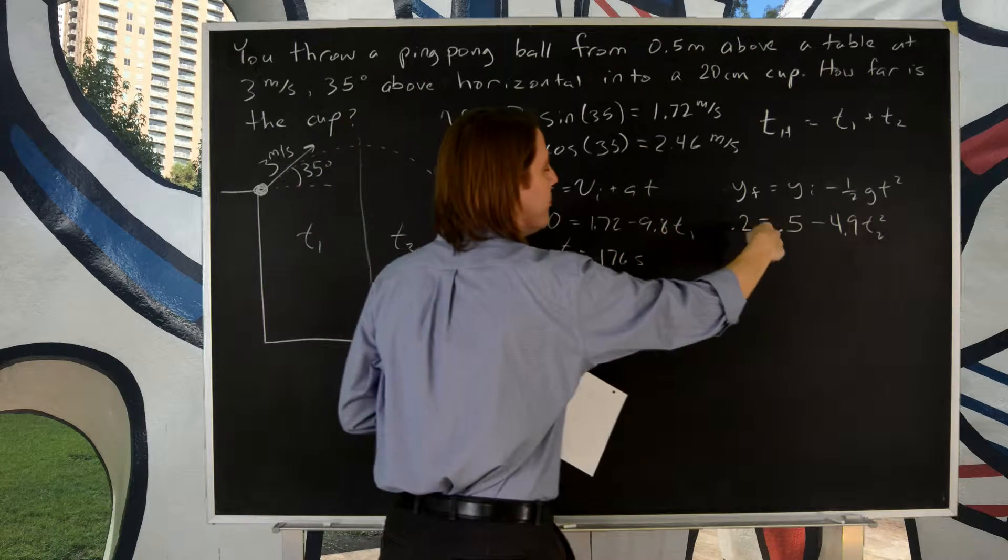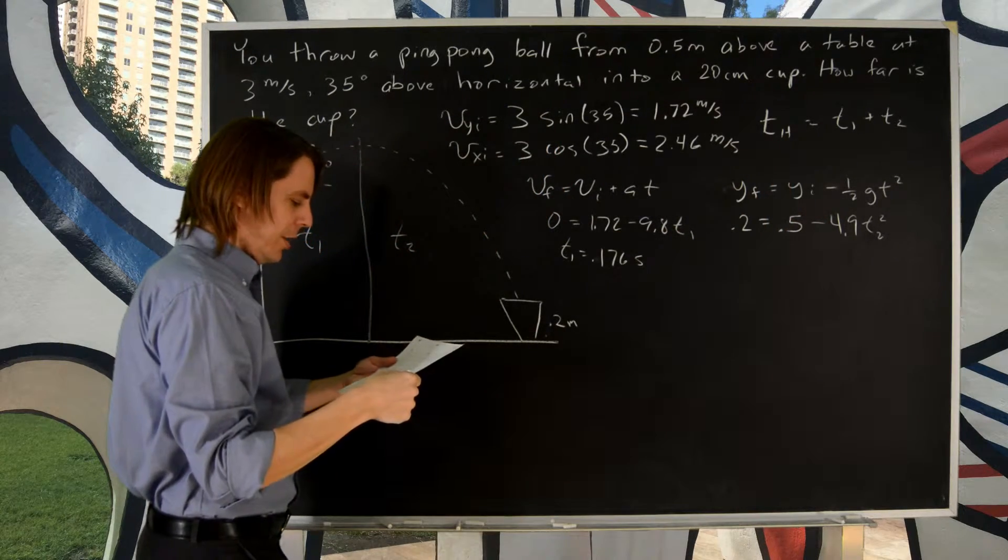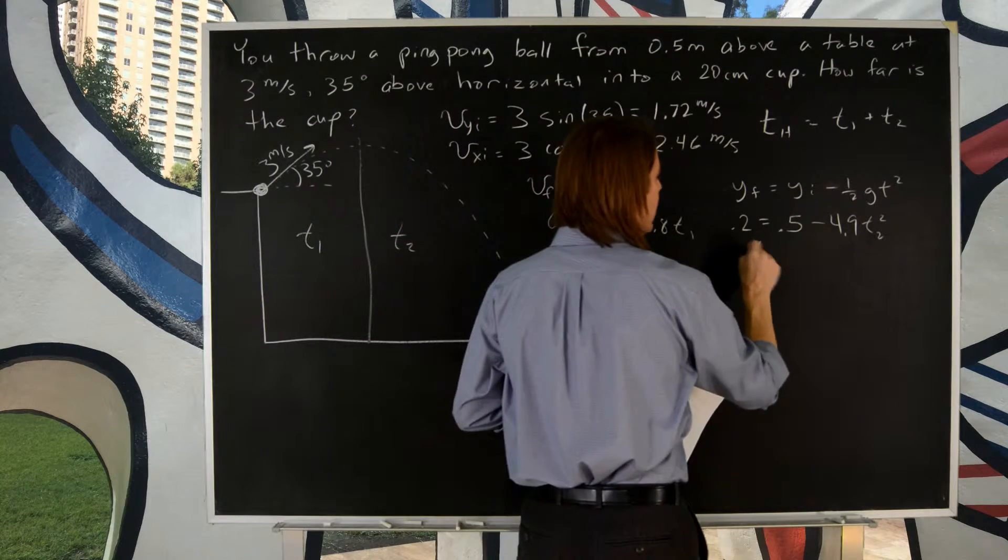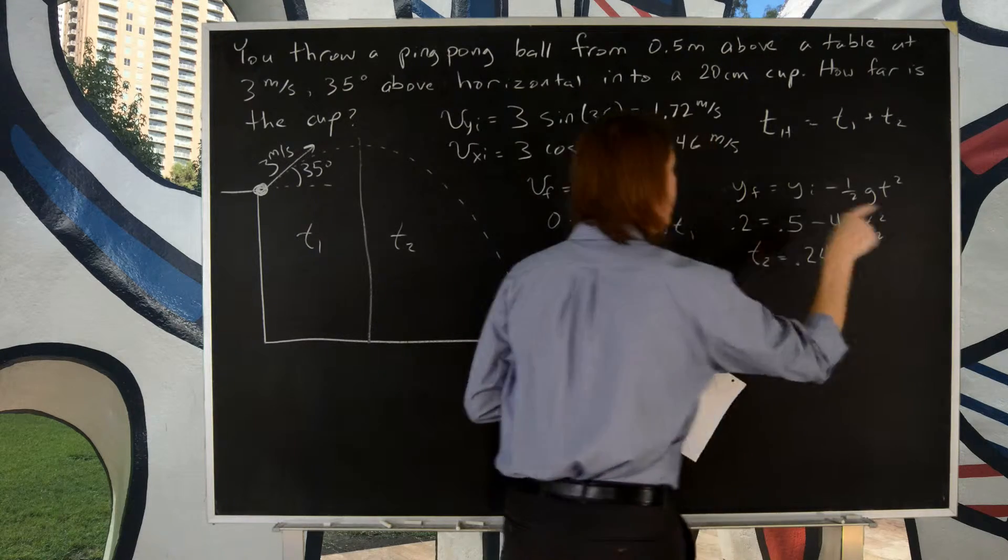So this becomes minus 0.3 divided by 0.3 by 4.9. You take the square root, and you get T2 is 0.247 seconds.